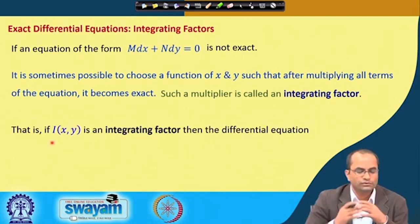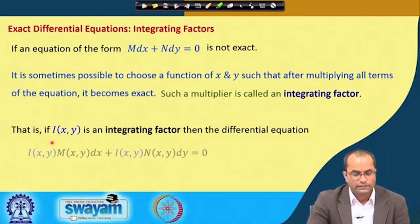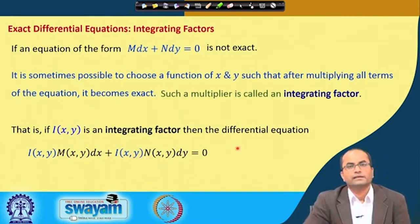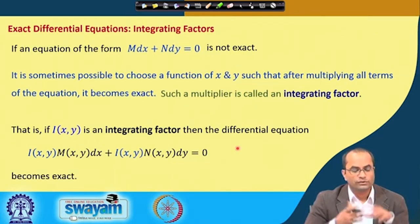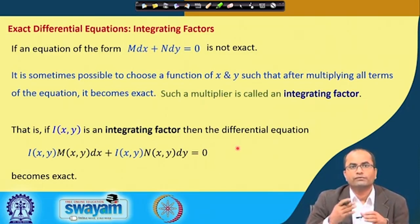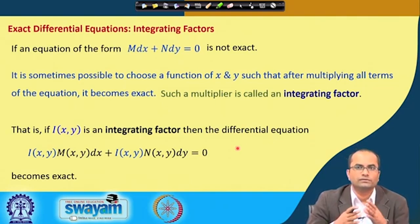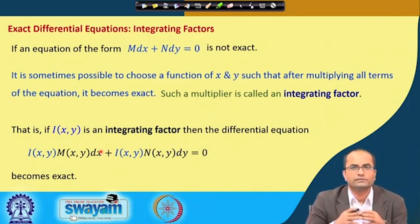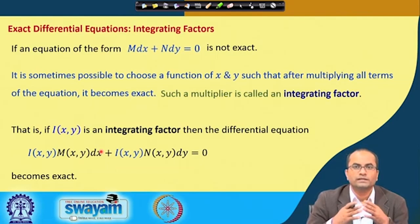The integrating factor is usually denoted i(x, y). If i(x, y) is an integrating factor, then the differential equation i(x,y)·M(x,y) dx plus i(x,y)·N(x,y) dy equals 0 becomes exact. The advantage is: when the given equation is not exact and is difficult to solve, we find the integrating factor, multiply it to the given equation to make it exact, and then we know how to solve exact differential equations by finding the function F whose differential is the left-hand side. The main topic of this lecture is techniques for finding the integrating factor.